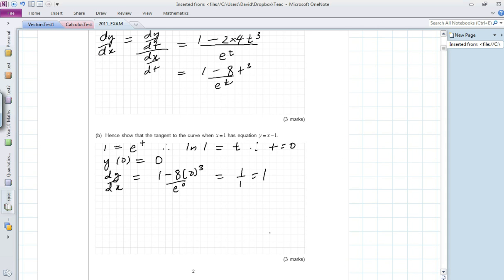To work out the equation of the line, we use this form: (y - 0) divided by (x - 1) equals the slope, which is 1.